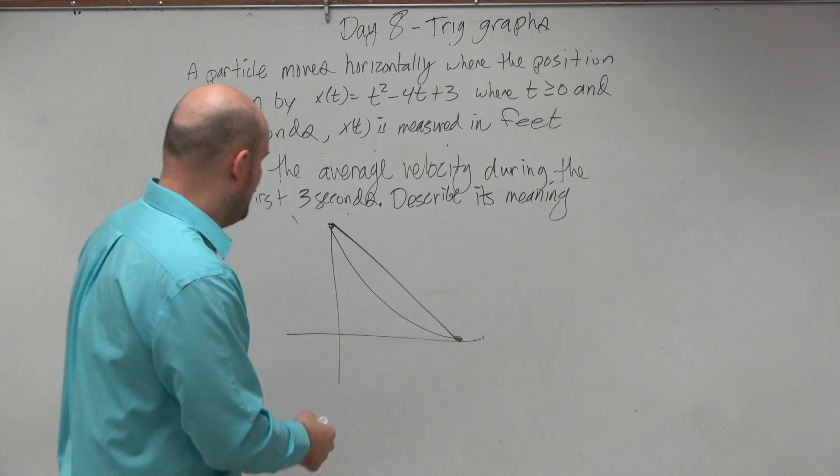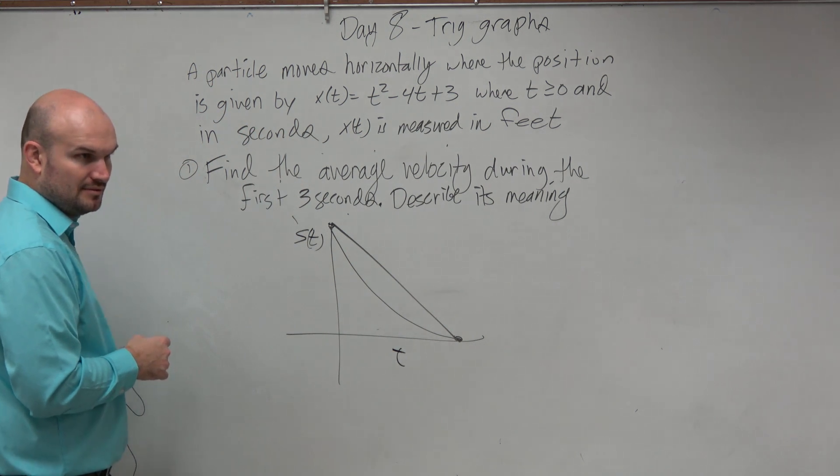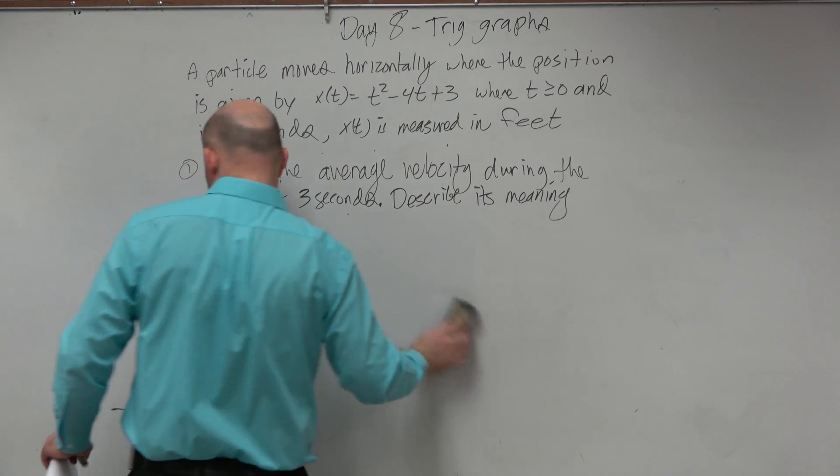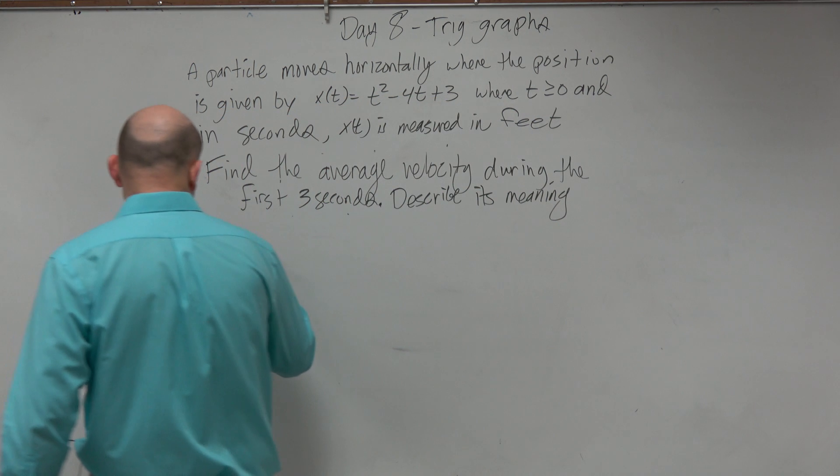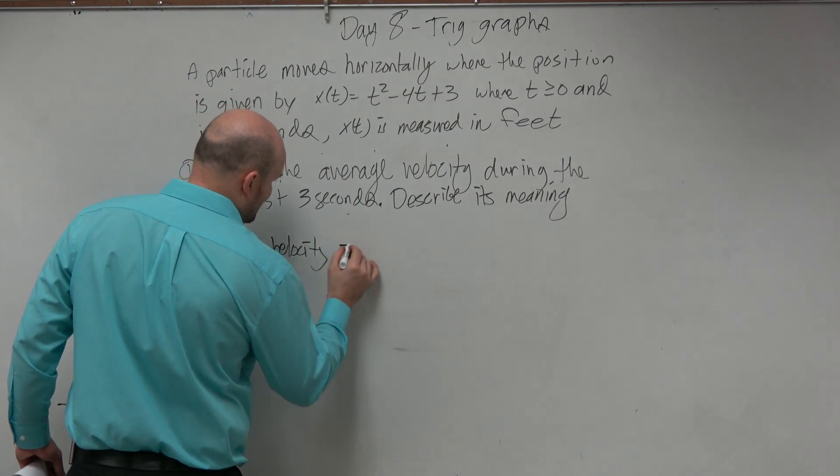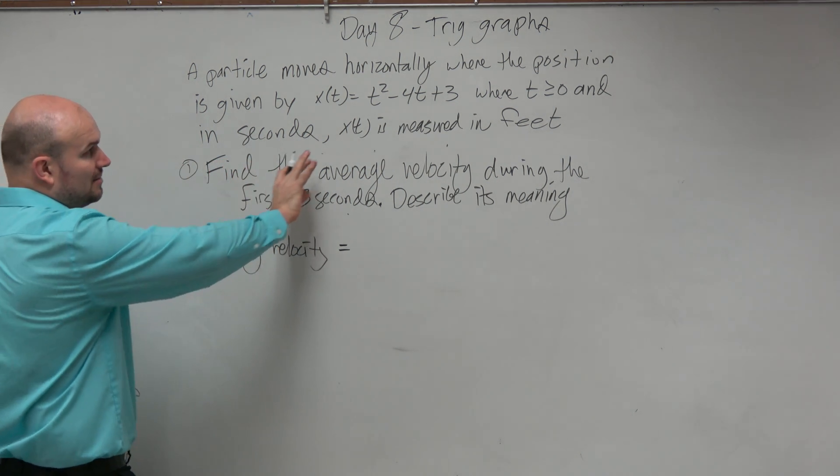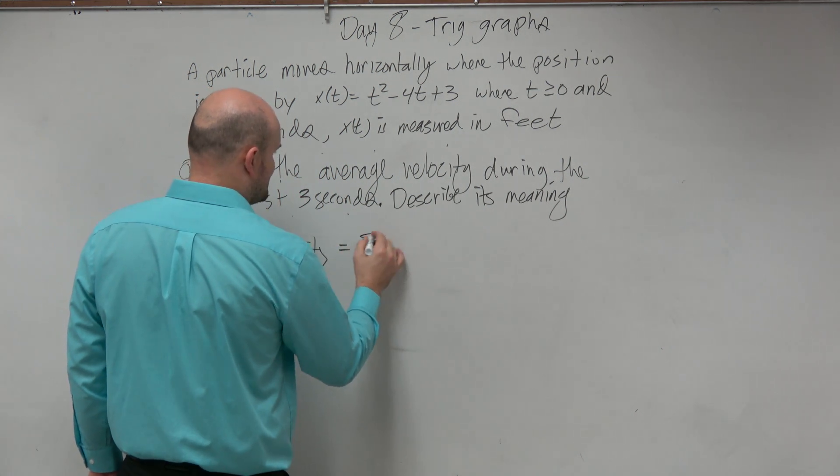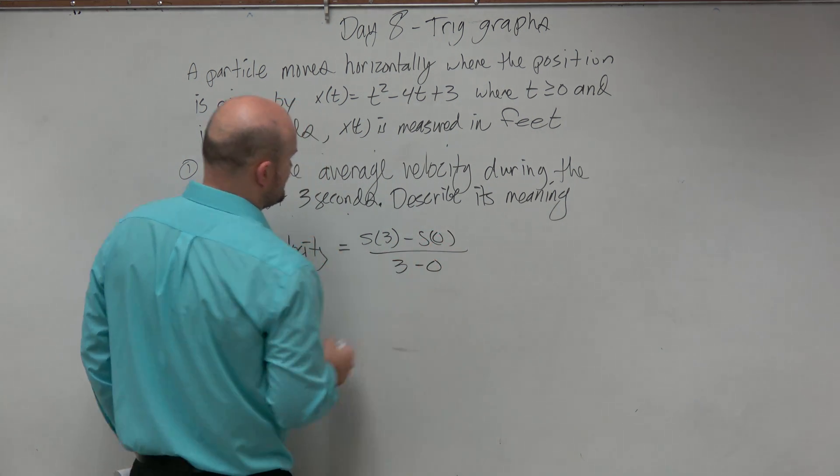What we need to understand is this is going to be the change in position over the change in time. So a couple of things I noticed as I was walking around, a lot of you guys did not define that. I saw you guys write the difference quotient, but you didn't define it. So write average velocity equals, and then what we're trying to do is we're trying to find the change in time from 0 to 3. So we'll do s of 3 minus s of 0 all over 3 minus 0.